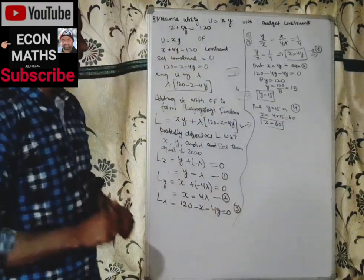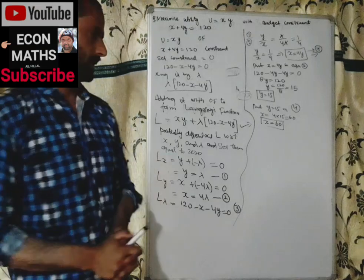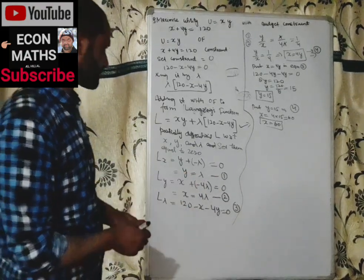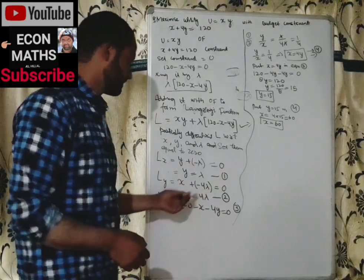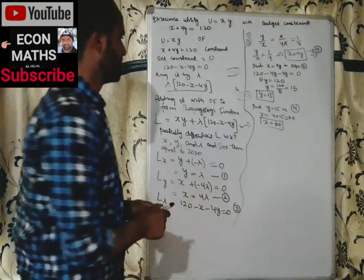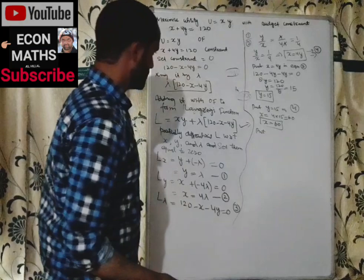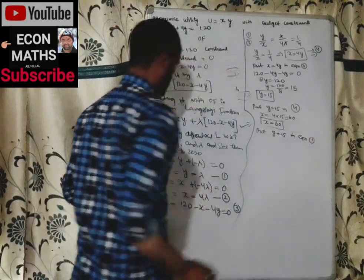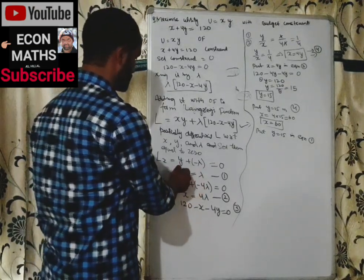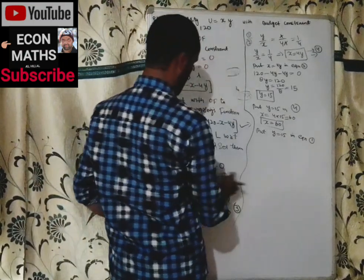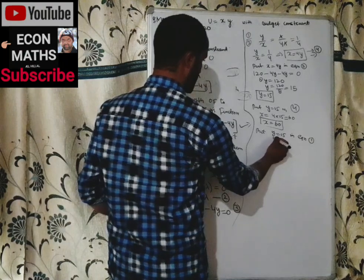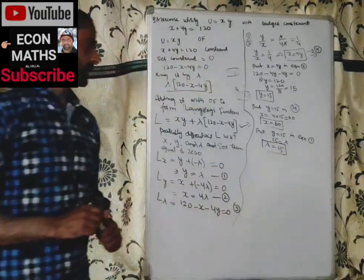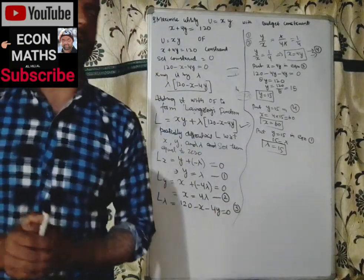To find lambda, we look at which equations contain lambda. Substituting y = 15 into Equation 1 (y = λ), we get λ = 15. We have now found all optimal values: x = 60, y = 15, and λ = 15.